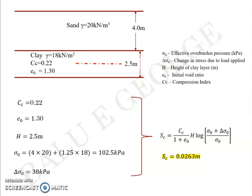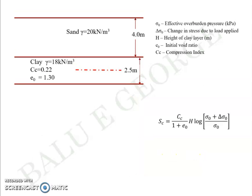Now the second part of the question: you have the water table at the ground level, like this. So the only difference is the difference in effective overburden pressure. Everything else remains the same.